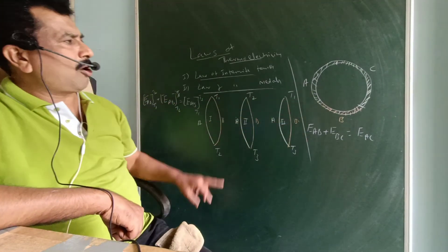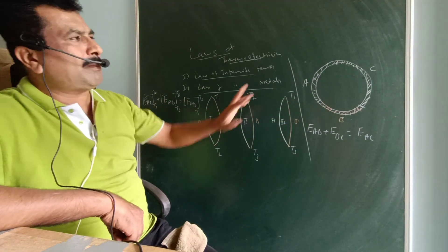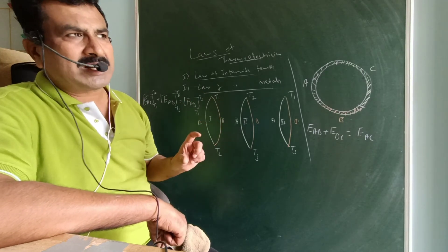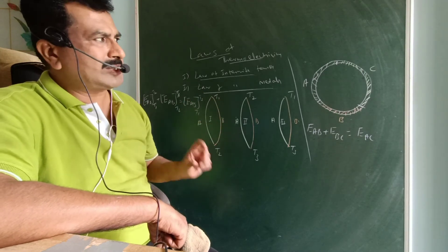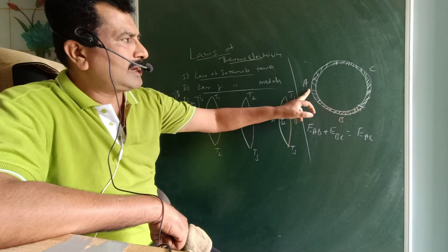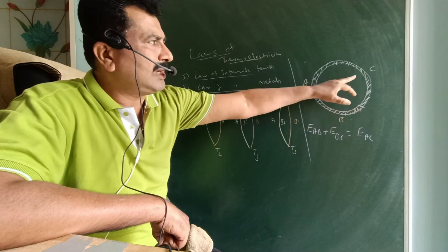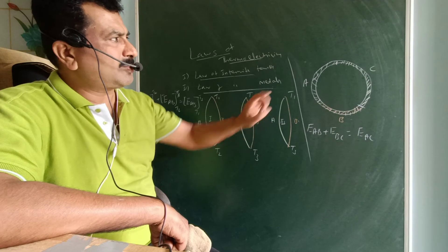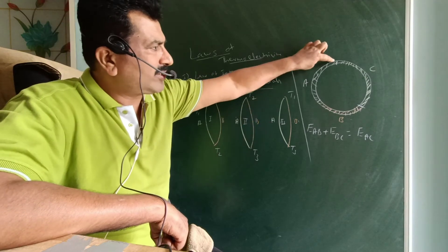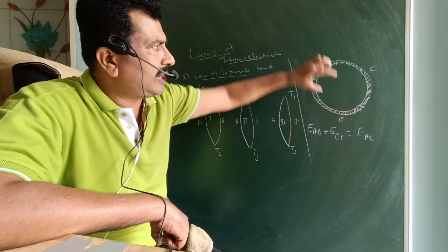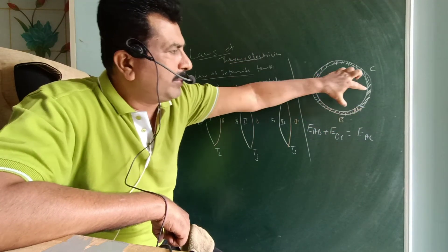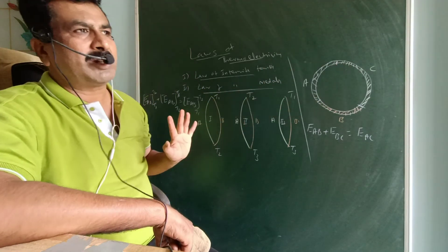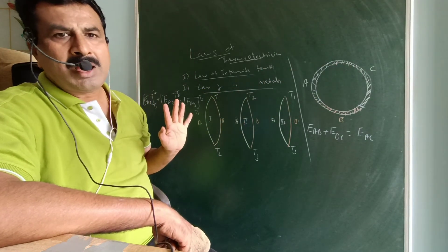The second law is the law of intermediate metals. In a thermocouple, there are three dissimilar metals: metal A, metal B, and metal C. With three metals, there are three junctions: junction AB, junction BC, and junction AC — three junctions in total.